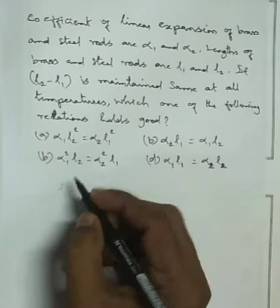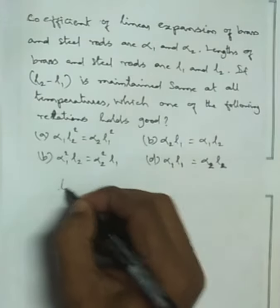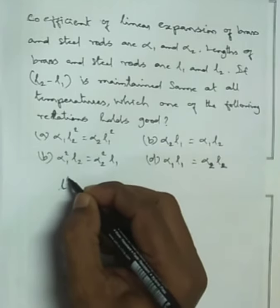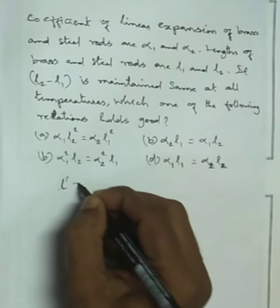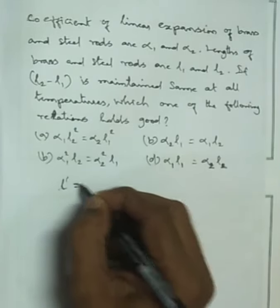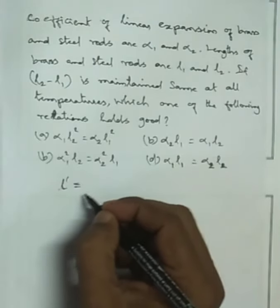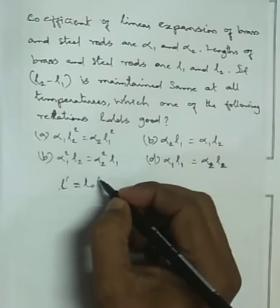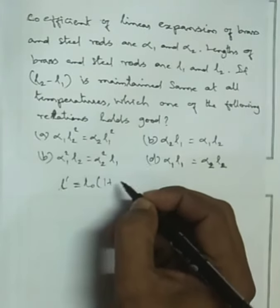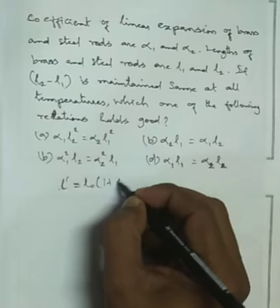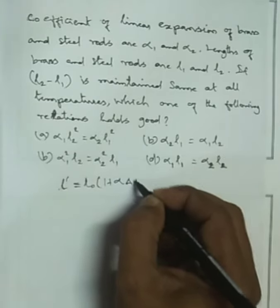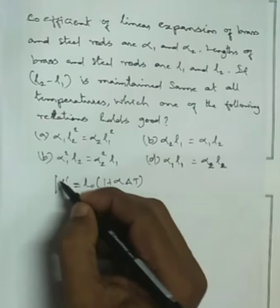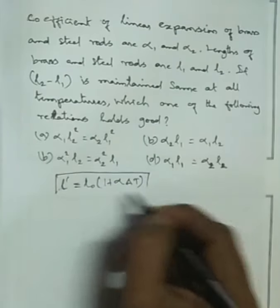First, linear expansion. After expansion, the new length is L dash. The formula is: original length into 1 plus alpha delta t. This is the thermal expansion formula.